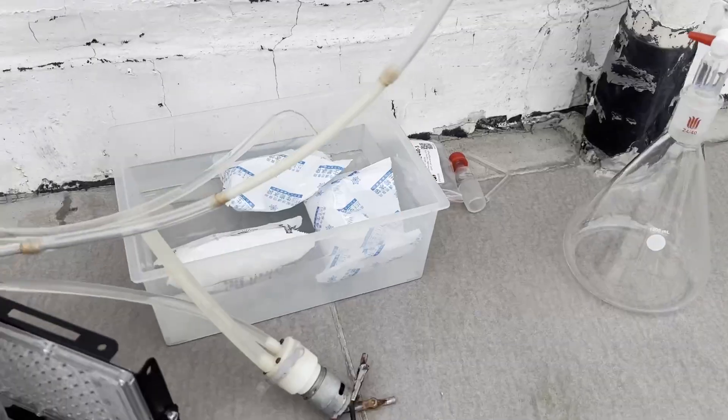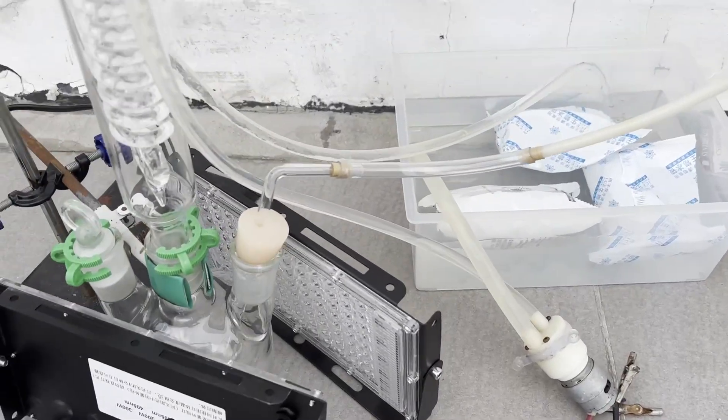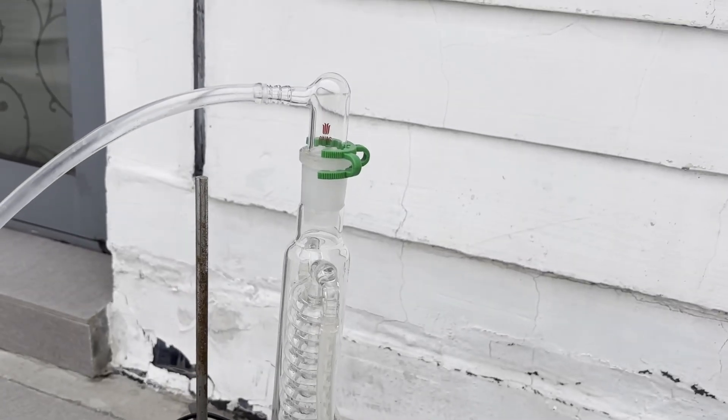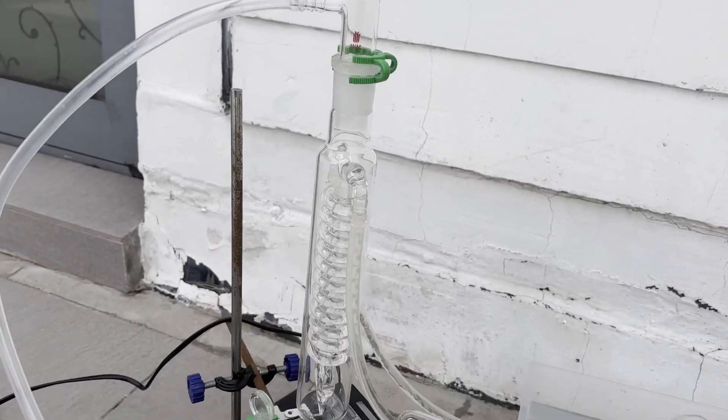Instead of fresh DCM, I'm going to use the carbon tetrachloride that we distilled over last time, so we don't have to add more chlorine to fully chlorinate the solvent, which would allow me to determine the minimal amount of chlorine needed to run the reaction properly.